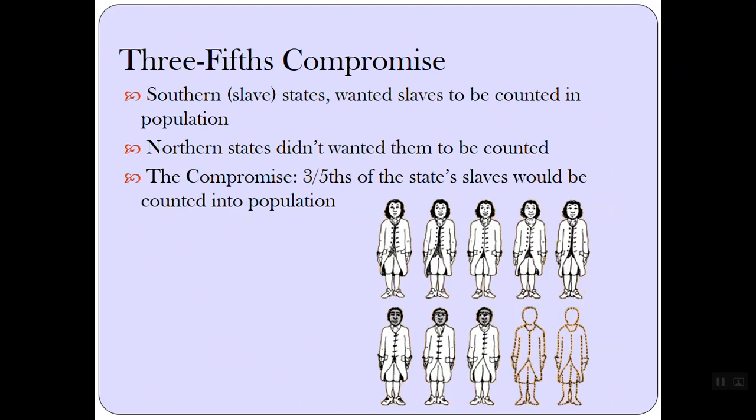Another compromise they came up with was the Three-Fifths Compromise. Southern slave states wanted slaves to be counted in the population for representation, while Northern states didn't want them counted for representation but did want them counted for the state's tax revenue. Southern states didn't want them counted as tax revenue. So the compromise was that three-fifths of the slave population would be counted — for every five white men, they would count three slaves.